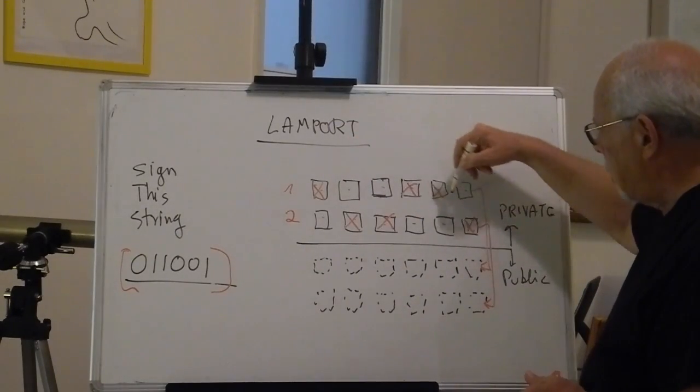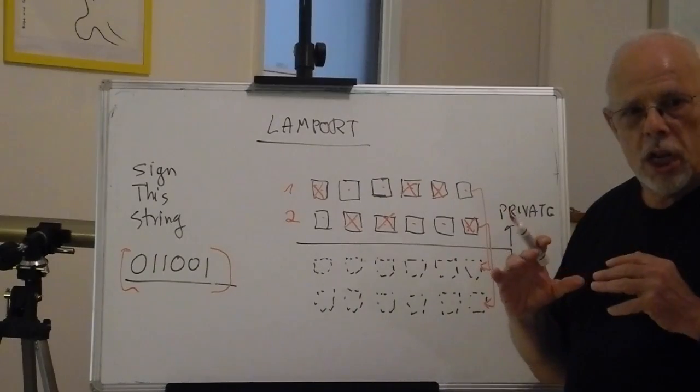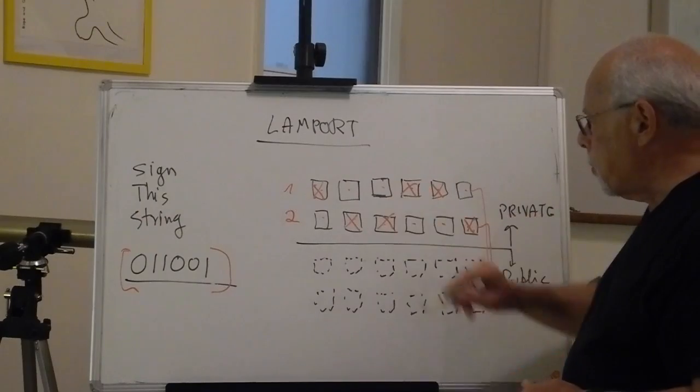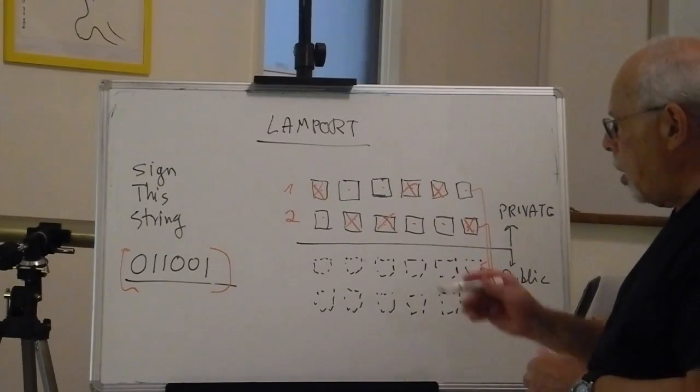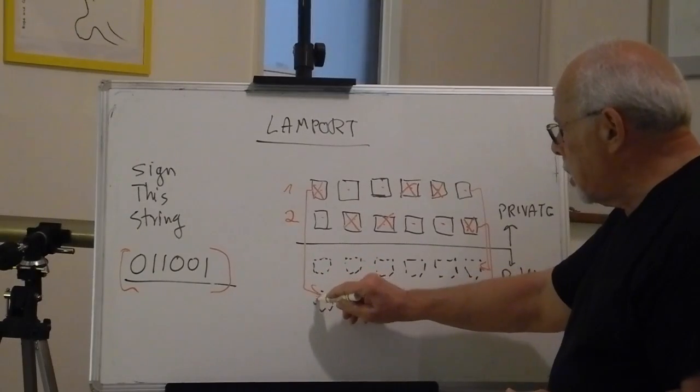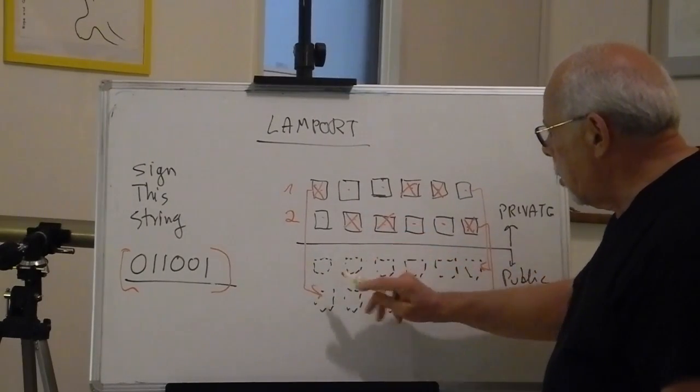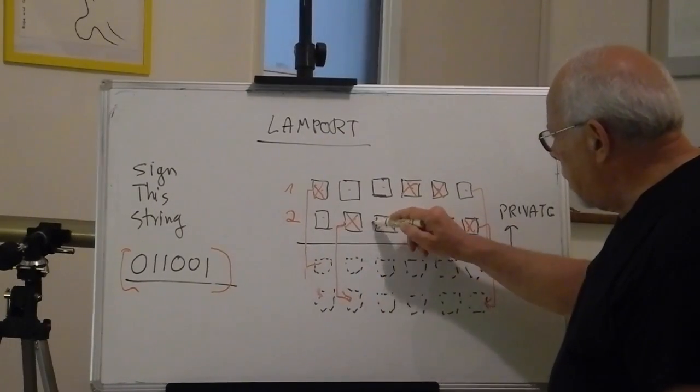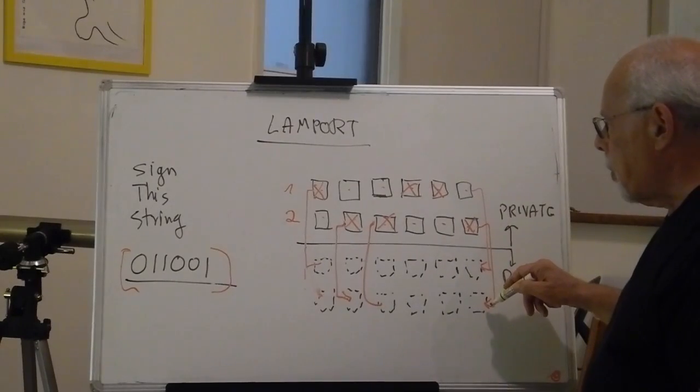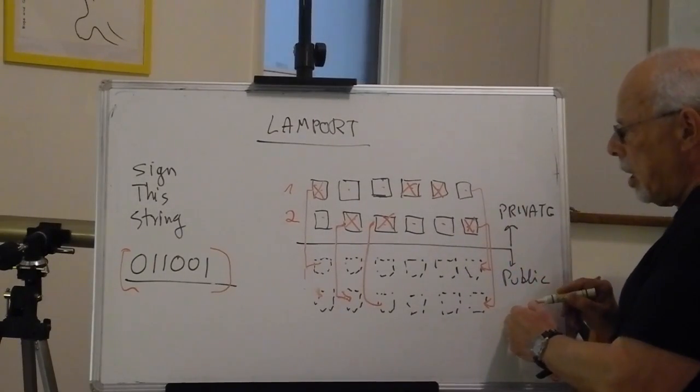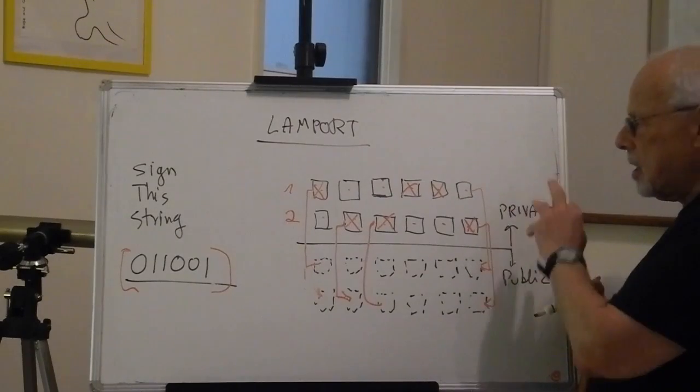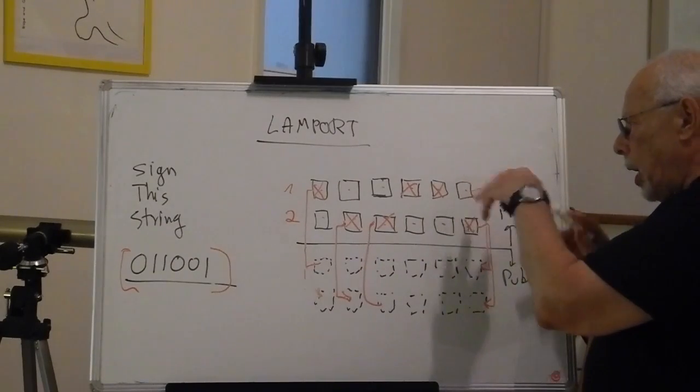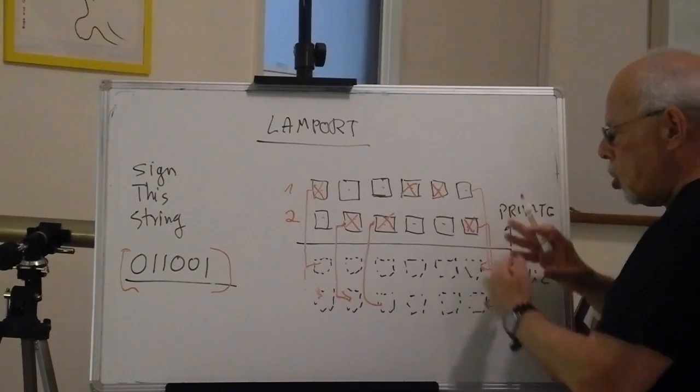And then, all the numbers that she marks, she provides Bob with those numbers. So now Bob can check that this corresponds to this, this corresponds to this, this to this, etc.